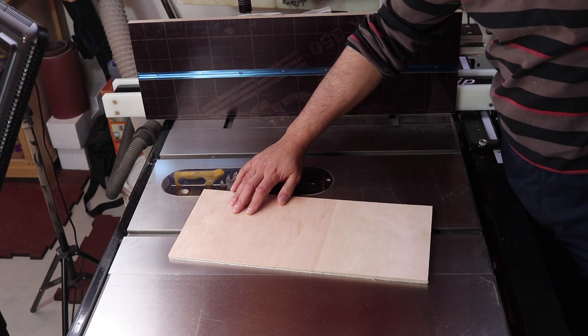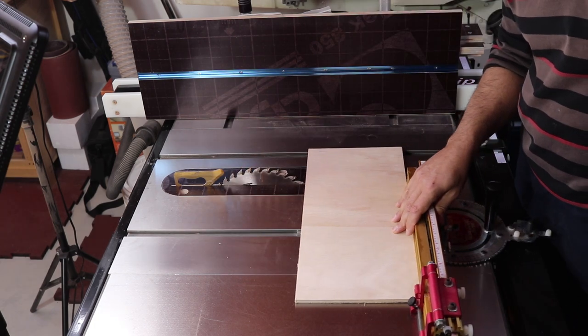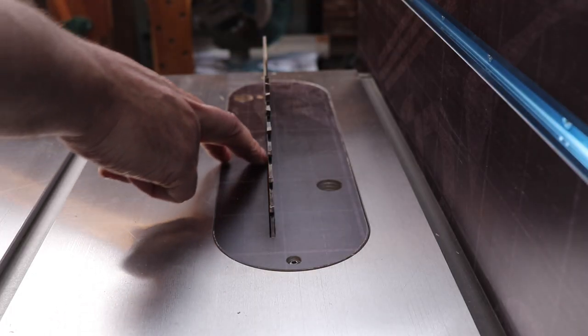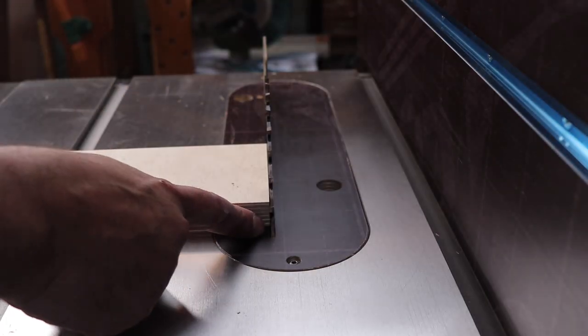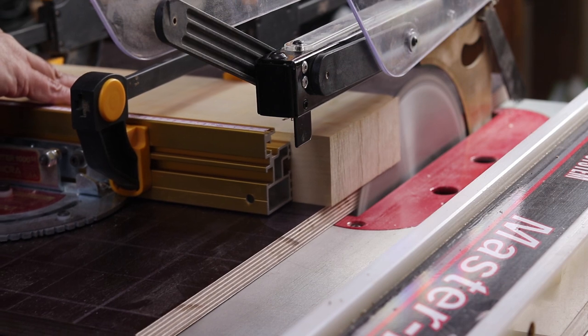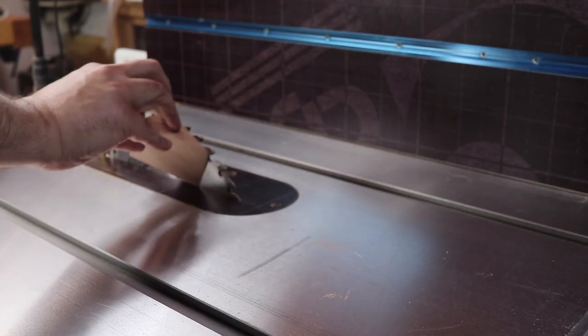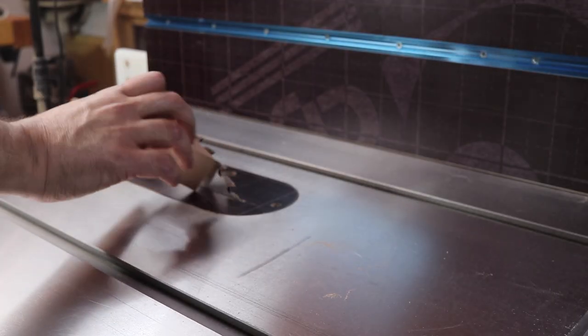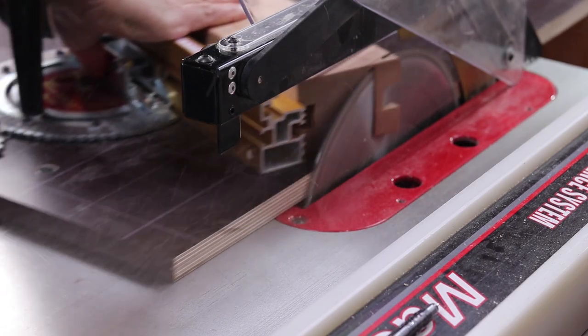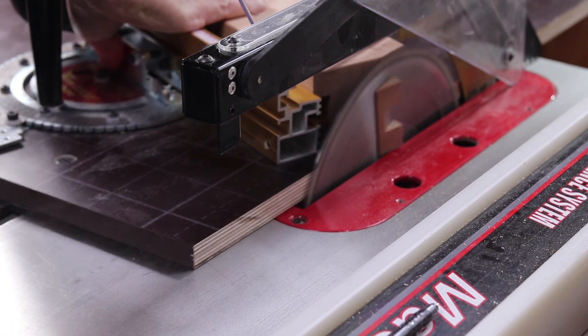Instead you can use the miter gauge or a cross cutting sled to make this cut. You can make this zero clearance insert to help you get cleaner cuts on plywood or any laminated boards, but also to stop small pieces from slipping between the saw blade and the insert, and to stop unevenly shaped pieces from wedging themselves between the blade and the insert then shooting them back at you like bullets.